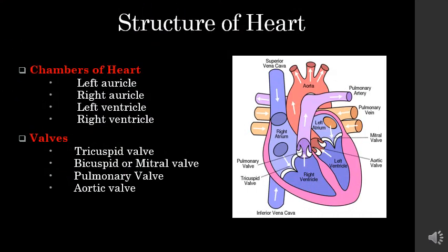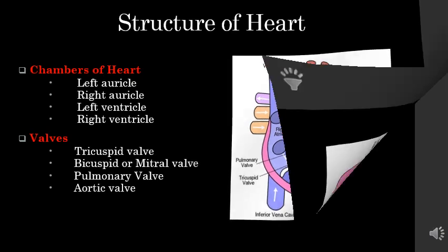In today's class we discussed the four chambers of the heart — the left auricle and right auricle, the left ventricle and right ventricle — and the four valves present in the heart that regulate the flow of blood: the tricuspid valve, bicuspid valve, pulmonary valve, and aortic valve. We will continue with the chapter on the circulatory system and discuss the path of blood circulation in the next class. Thank you and take care.